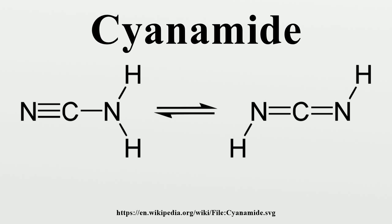Cyanamide dimerizes to give 2-cyanoguanidine. This decomposition process is disfavored by acids and is inhibited by low temperatures. The cyclic trimer is called melamine.